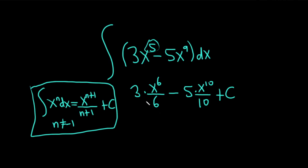3 over 6, that's going to be 1 over 2. So this will be x to the 6th over 2, because 3 goes into 6 twice. Same thing here, 5 goes into 10 twice. So this is x to the 10 divided by 2 plus our constant of integration, capital C.